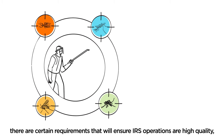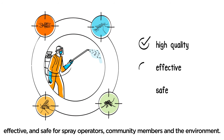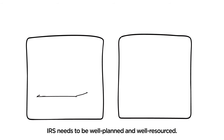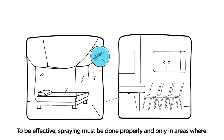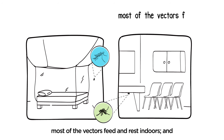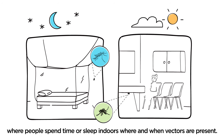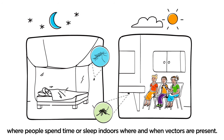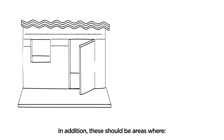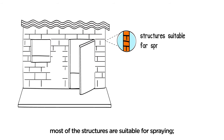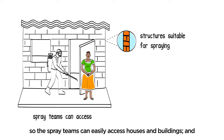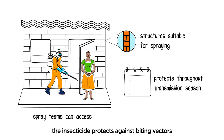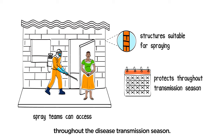Regardless of the target vectors and diseases, there are certain requirements that will ensure IRS operations are high-quality, effective, and safe for spray operators, community members, and the environment. IRS needs to be well-planned and well-resourced. To be effective, spraying must be done properly and only in areas where most of the vectors feed and rest indoors, and where people spend time or sleep indoors where and when vectors are present. In addition, these should be areas where most of the structures are suitable for spraying, the community accepts spraying so the spray teams can easily access houses and buildings, and the insecticide protects against biting vectors throughout the disease transmission season.